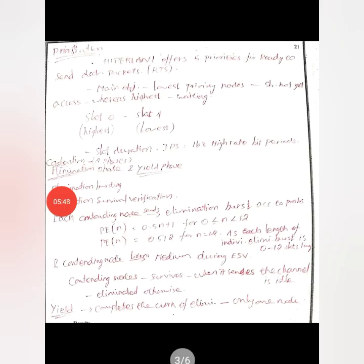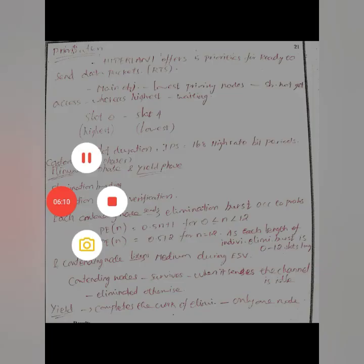In the yield phase, it completes the work of elimination, yielding only one node in the final. In the last phase — the transmission phase — all other remaining nodes can start their transmission. These are the three phases: prioritization, contention, and transmission.